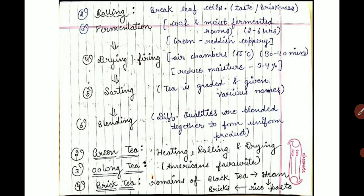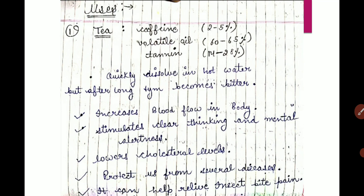These were the types of tea commonly found in the world. Now let's see what the chemical components are. There are 3 main components present in tea: caffeine, volatile oil, and tannin. Tea quickly dissolves in hot water but after a long time becomes bitter in taste.